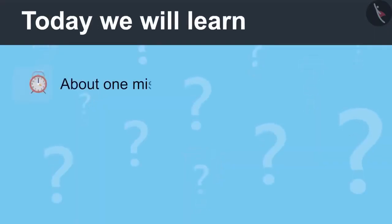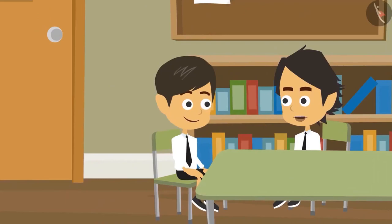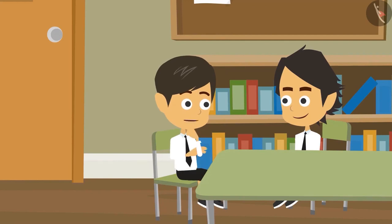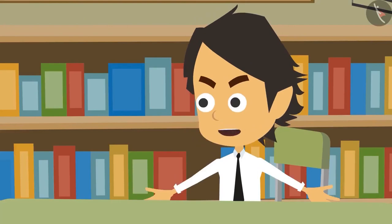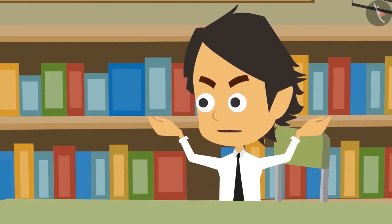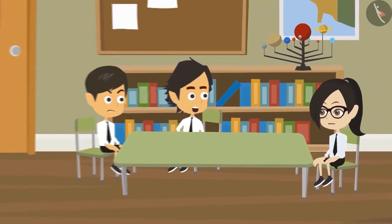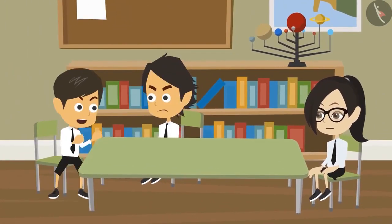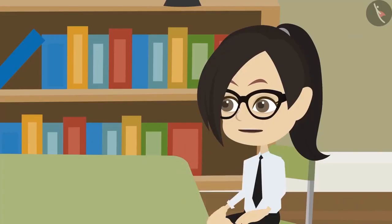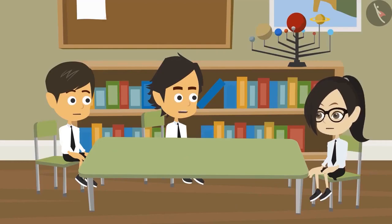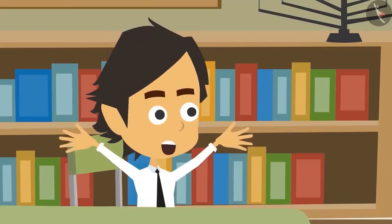Today we will learn about one mistake related to reading the clock. From home, I reach school in 2 minutes. I take 10 minutes and we both reach at the same time — then how does it take you 2 minutes? Even you should take 10 minutes. No, it only takes me 2 minutes. I leave my home at 9 o'clock and I reach here at 2 minutes past 9 o'clock. So, is it not 2 minutes?